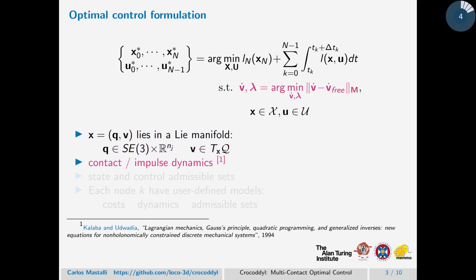We derive contact and impulse dynamics and their analytical derivative. We ground our method using the Gauss principle of least-constraint, where we encode holonomic constraints for the contacts.